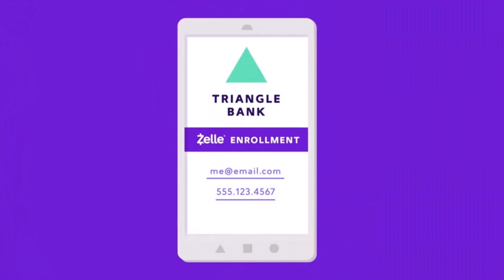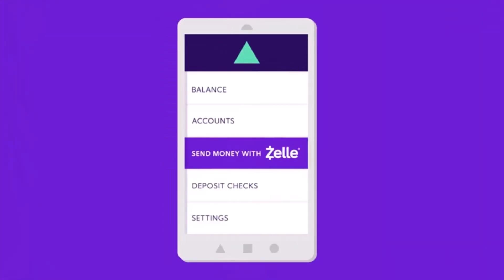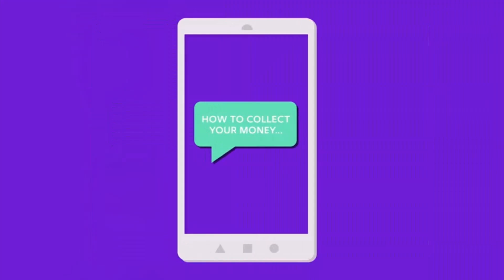If your bank does support Zelle, you can open the banking application and select to enroll for Zelle. Once you've enrolled, depending on whichever banking app you have, simply tap on the option that says 'Send Money with Zelle.' It is available on almost all banking apps across the U.S.